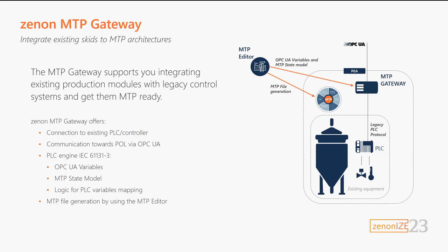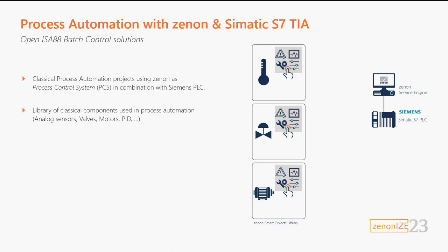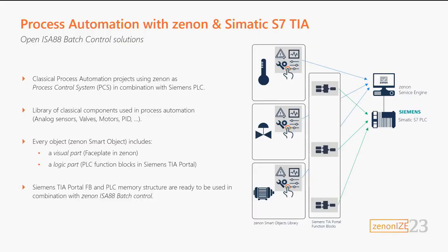The combination of MTP Studio in Xenon and the MTP gateway offers this integration. We also saw from Alessandro how to create open process automation applications including ISA 88 batch control, using Xenon as a process control system and a Siemens PLC. We saw how easy it is to have a library of standard modules — sensor, valve, and many others — composed by a visual part on Xenon and a logic part on the Siemens PLC, ready for ISA 88 batch control.